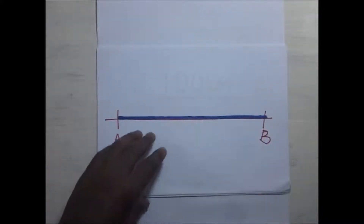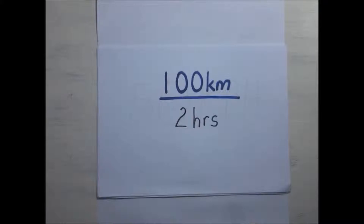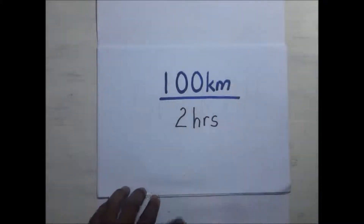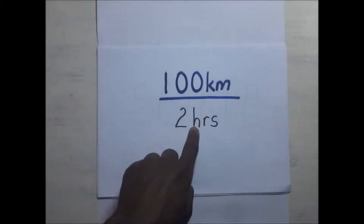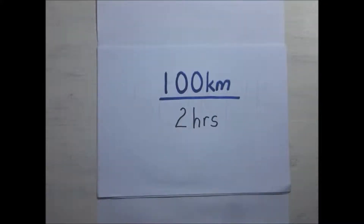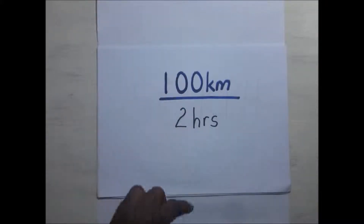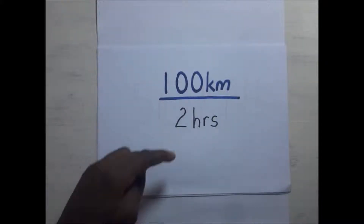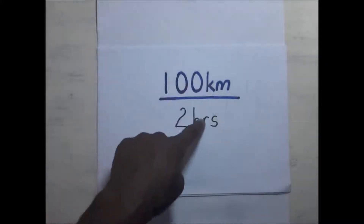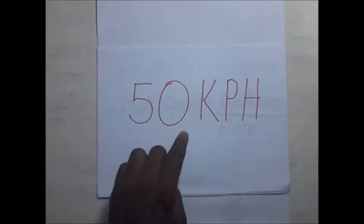The distance covered is 100 kilometers. We divide that by the two hours it took — we are assuming it took two hours to move from A to B. So the answer is 50 kilometers per hour. That is the speed.